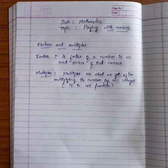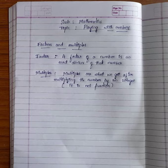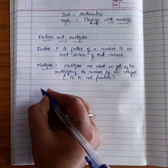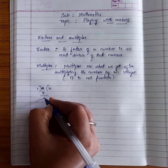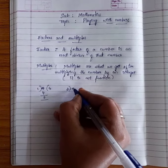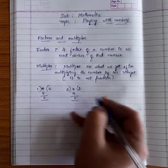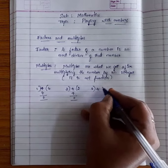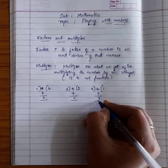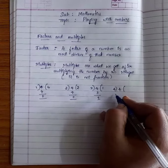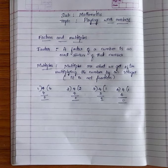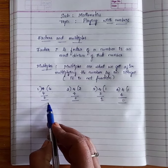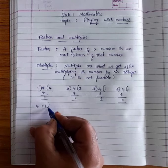Consider one example: Mary wants to find those numbers which exactly divide 4. She divides 4 by numbers less than 4. When she divides by 1, the remainder becomes 0. When she divides by 2, the remainder becomes 0. When she divides by 3, the remainder becomes 1. So 4 = 1×4.